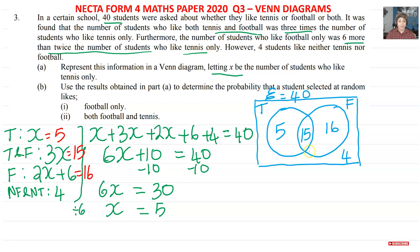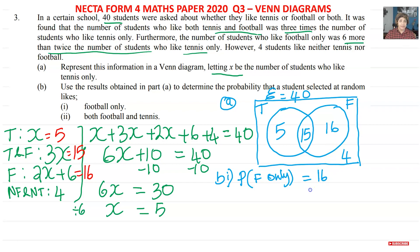Now for part (b). For (b)(i), we're asked to find the probability that a randomly selected student plays football only. Probability of football only = 16 ÷ 40. Dividing both by 8 gives us 2/5. So the answer for (b)(i) is 2/5.